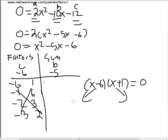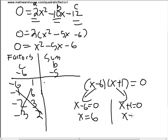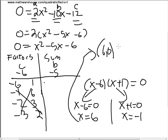Solving the individual branches: adding 6 to both sides on x minus 6 equals 0 gives x equals 6. Subtracting 1 from both sides on x plus 1 equals 0 gives x equals negative 1. Our solutions — the points where this parabola crosses the axis — are 6, 0 and negative 1, 0.